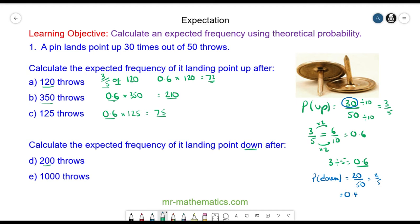So we have the experimental probability of 0.4 multiplied by our sample of 200, and this is 80 times. So we would expect it to land point down 80 times.